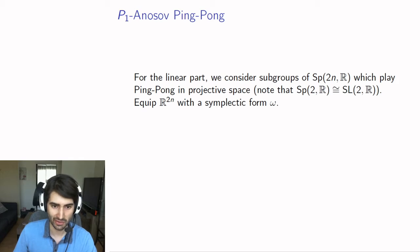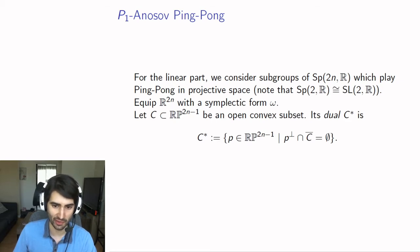You take a symplectic form on R2n to be able to define your symplectic group. Then we want a notion of a good subset of projective space that we will use to play ping-pong. So you take a convex subset and you define its dual C star.